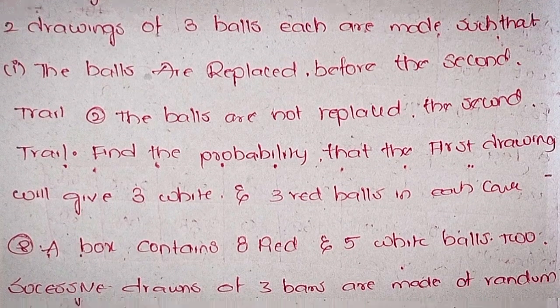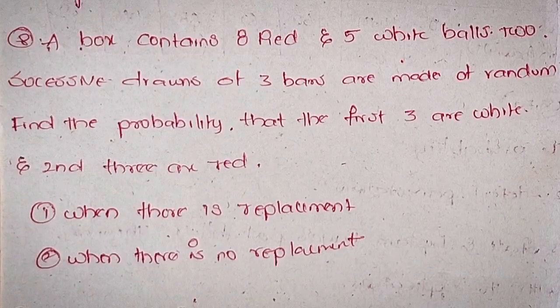Seventh, a bag contains five white and eight red balls. Two drawings of three balls each are made such that: first, the balls are replaced before the second draw; second, the balls are not replaced before the second draw. Find the probability that the first drawing gives three white and the second gives three red balls in each case. Eighth, a box contains eight red and five white balls. Two successive drawings of three balls are made at random. Find the probability that the first three are white and the second three are red — first when there is replacement, second when there is no replacement.